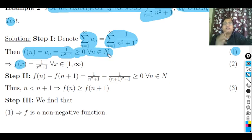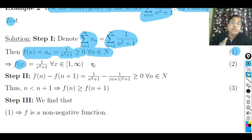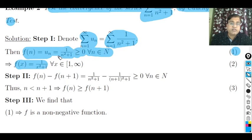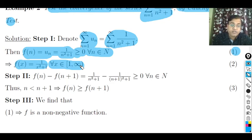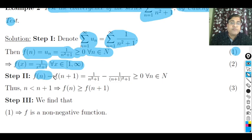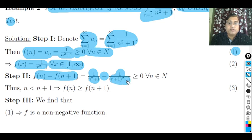This shows the function is non-negative. Since n ∈ ℕ (discrete), for integration we extend to continuous x: f(x) = 1/(x²+1) for all x ∈ [1, ∞). Now compute f(n) − f(n+1) = 1/(n²+1) − 1/((n+1)²+1) to check monotonicity.